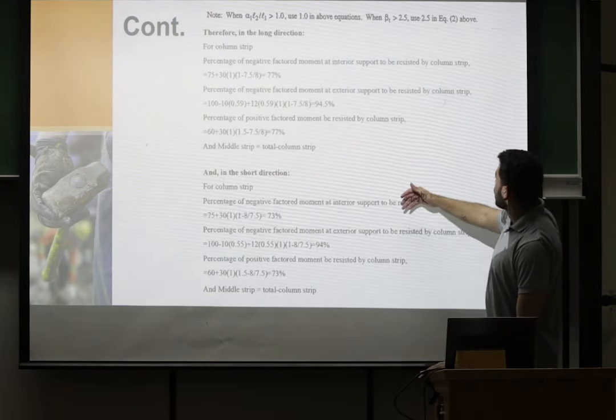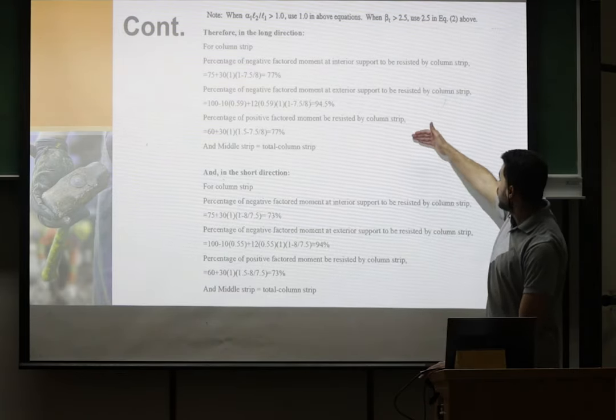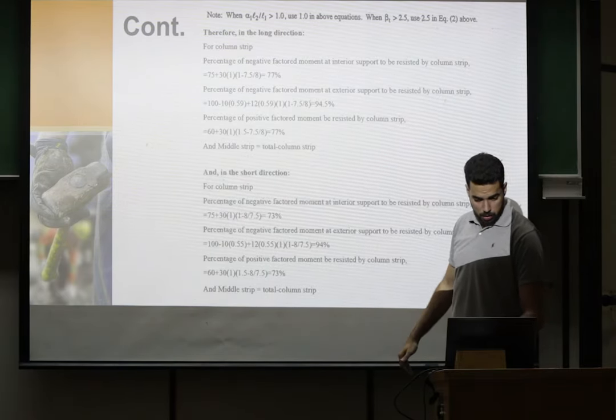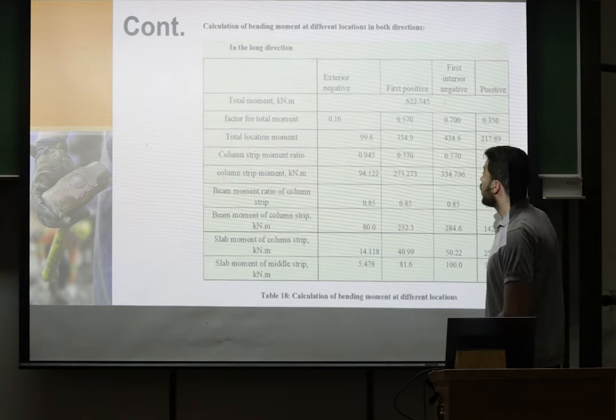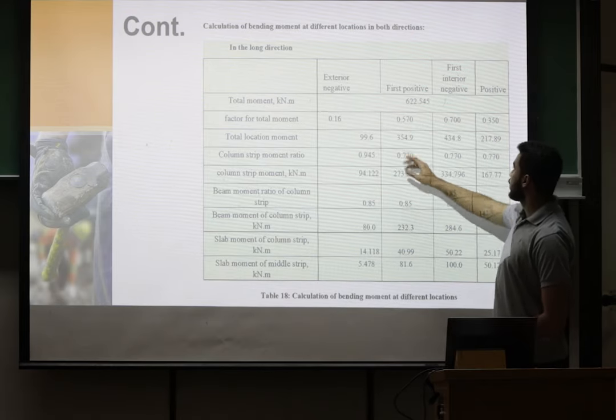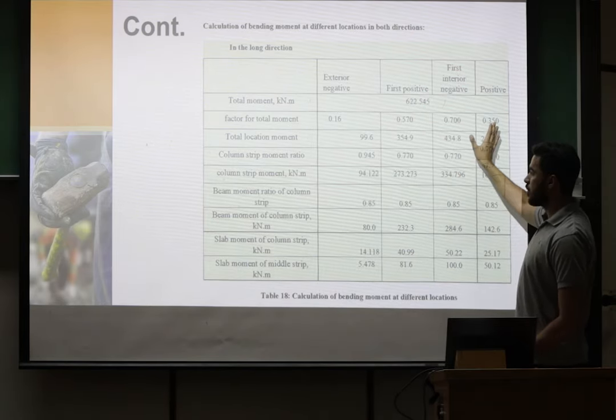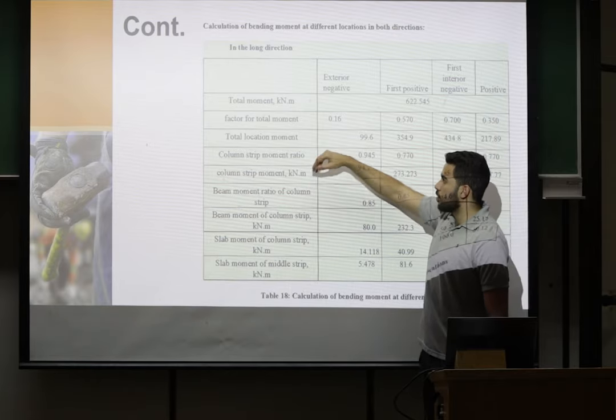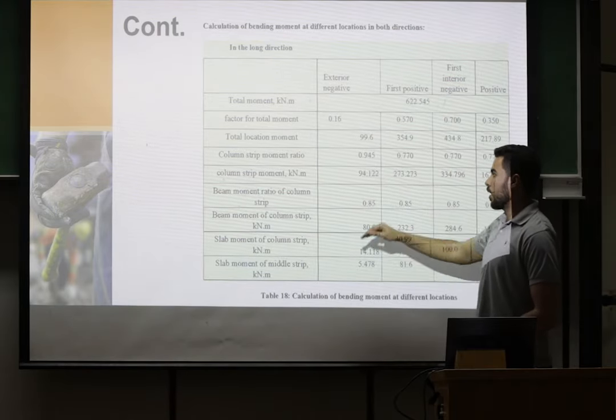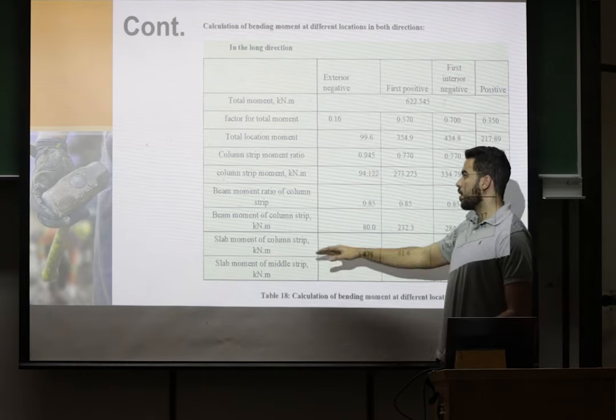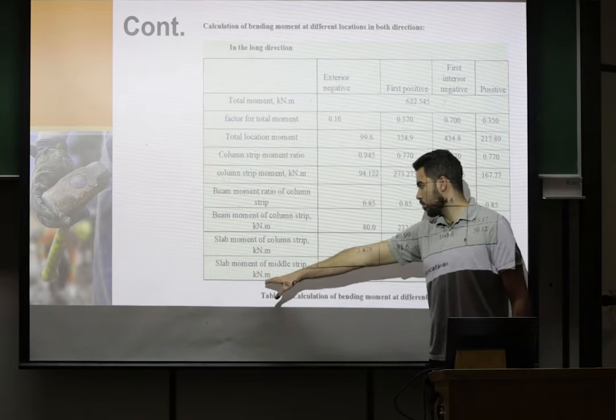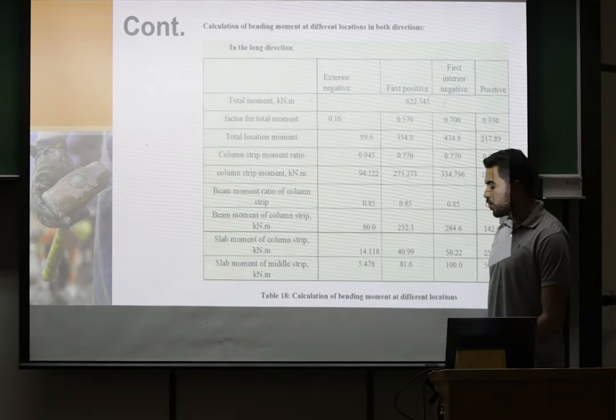Here we plug it as shown and find the some values that it will appear in the table. In the long direction there is an exterior negative and first positive and first interior negative and then positive. We find the total moment, factor of total moment, total location moment, column strip and column strip moment. Then beam moment ratio and in the end we find the slab moment of metal strip.